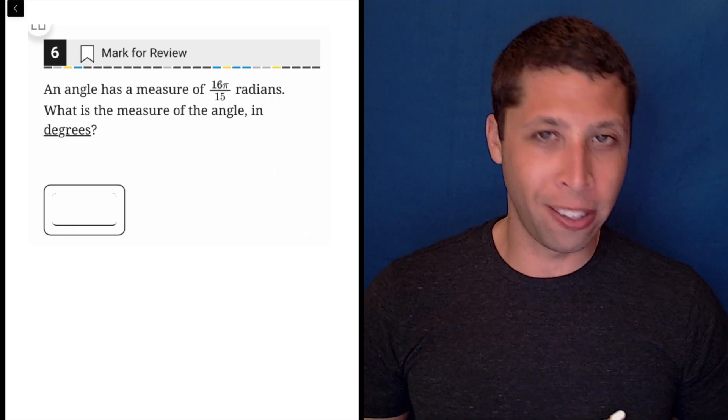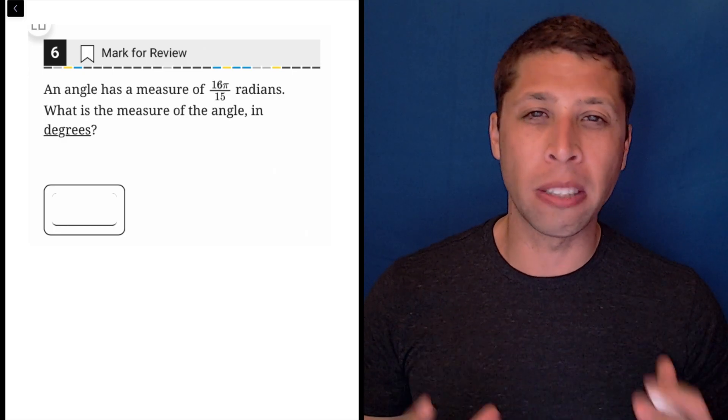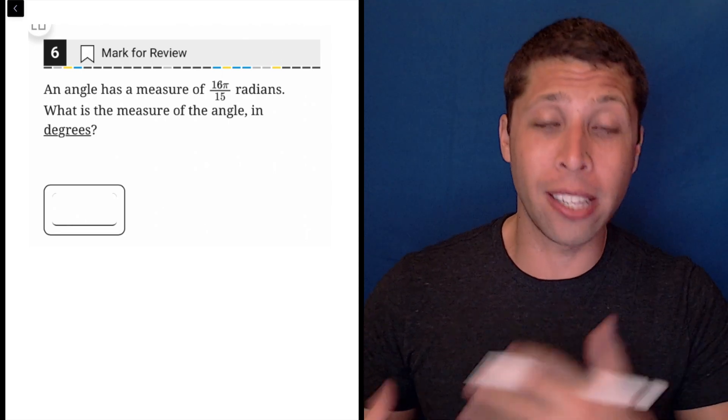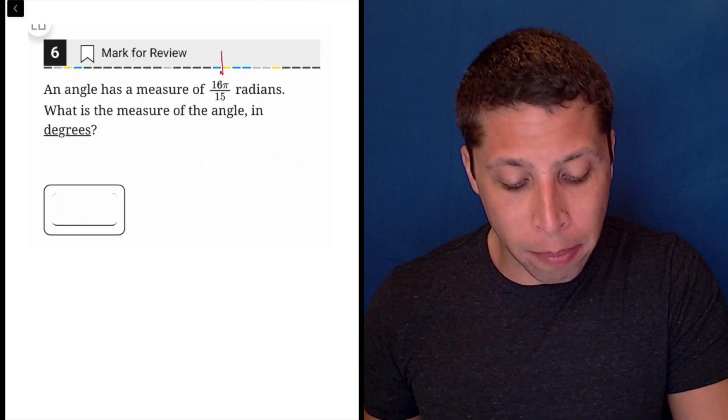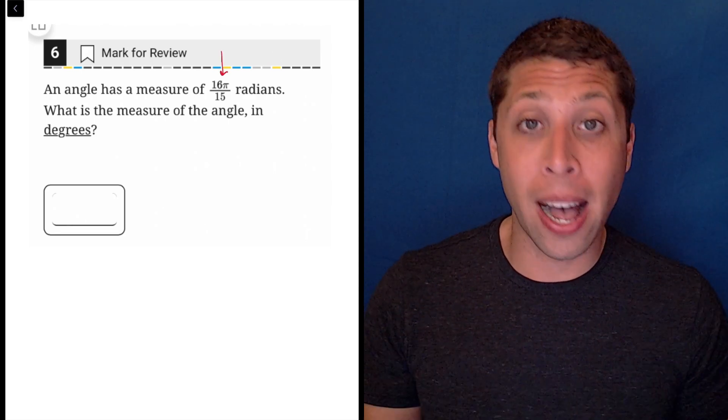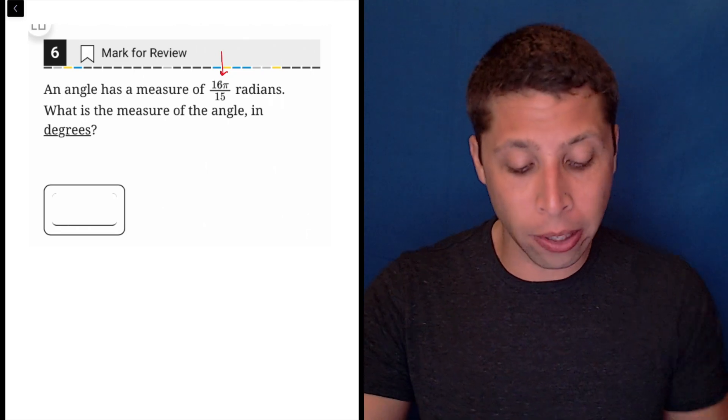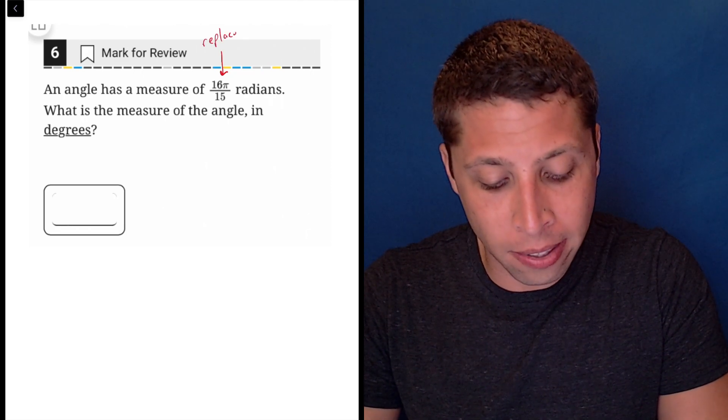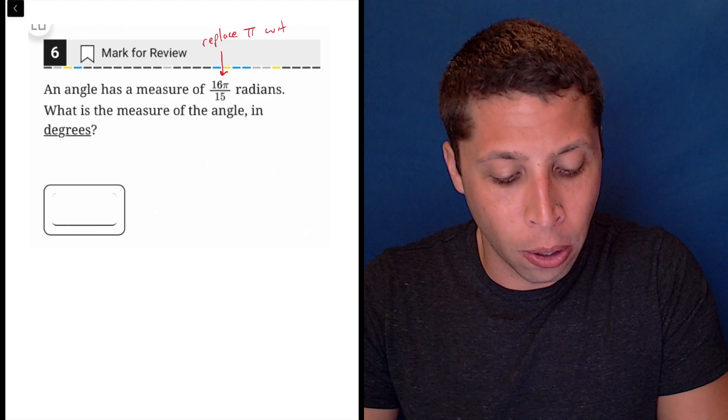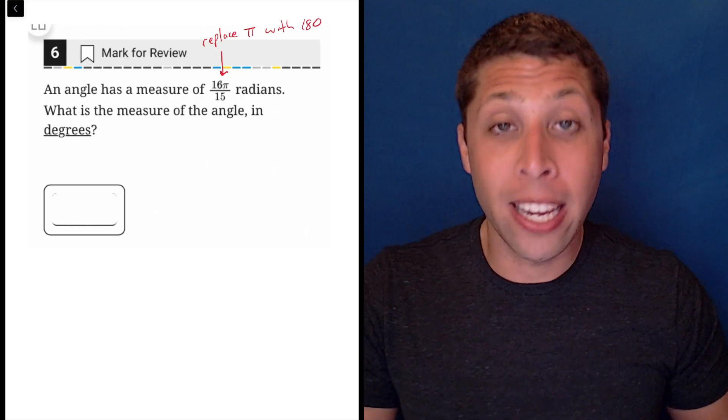If you've talked about radians in school, then you've probably heard a very simple way to convert from radians to degrees. Most radian measures are going to have some sort of pi involved. And basically what I learned is replace the pi with 180 and then reduce.